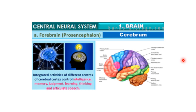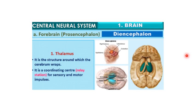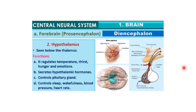All the activities of the different centres of the cerebral cortex control intelligence, memory, judgment, learning, thinking and articulate speech. The forebrain also includes the thalamus, which is the structure around which the cerebrum wraps. It is a coordinating centre — like a relay station — that relays information from sensory and motor impulses. Then we have the hypothalamus, found below the thalamus. The role of the hypothalamus is to regulate temperature, thirst, hunger and emotions. It also secretes hypothalamic hormones, controls the pituitary gland, and controls sleep, wakefulness, blood pressure and heart rate.